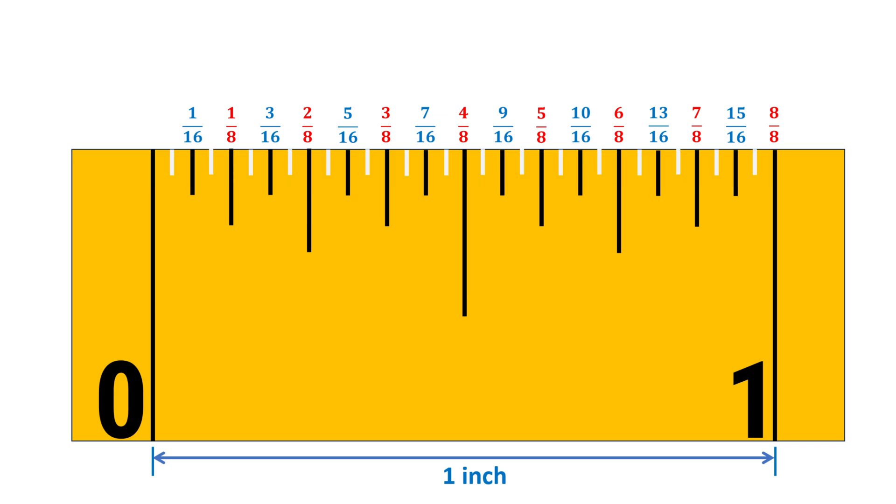Some fractions can be reduced even further. For instance, dividing both 2 and 8 in 2/8ths by 2 simplifies it to 1/4th of an inch, which is commonly known as quarter inch. In the same way, 6/8 simplifies to 3/4, also known as 3 quarters of an inch. 4/8 simplifies to half an inch and 8/8 equals 1 inch.